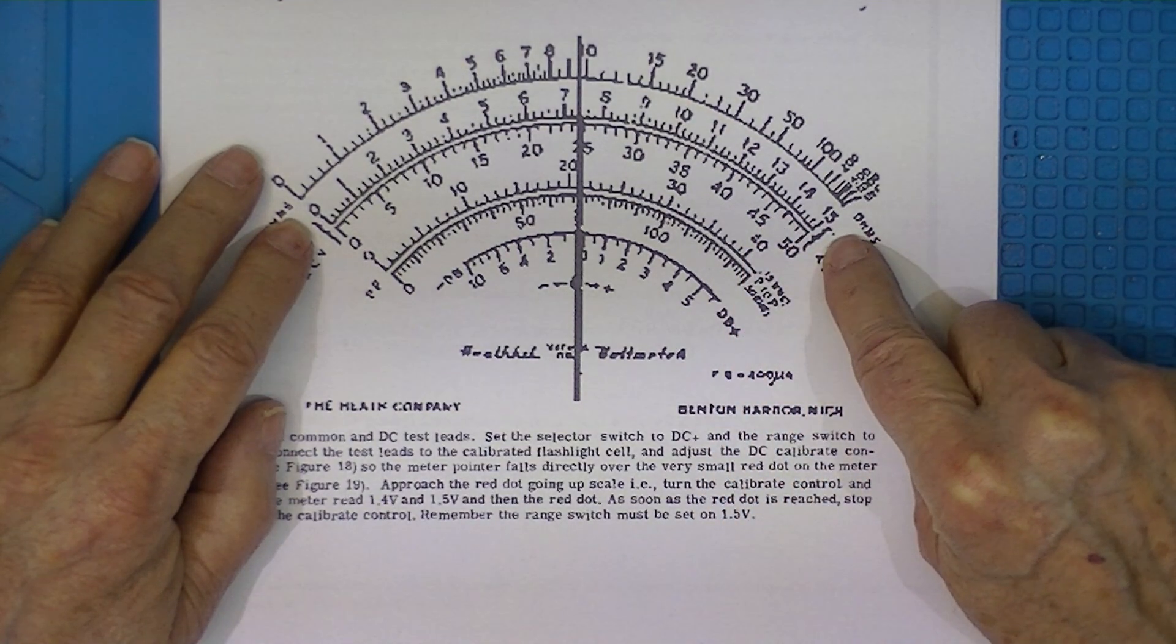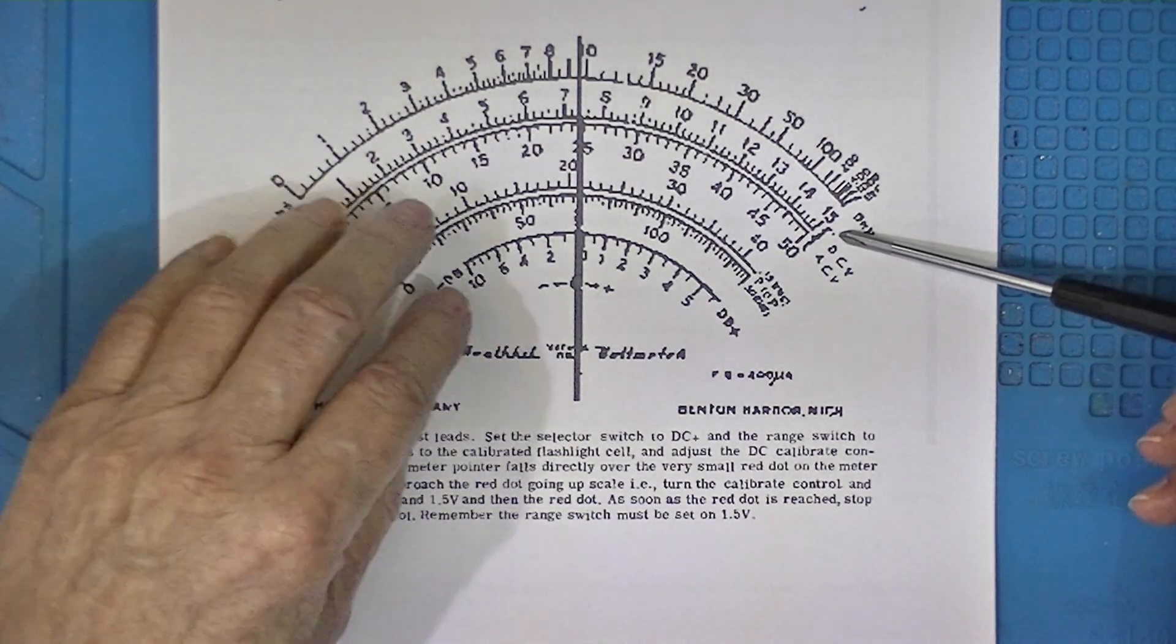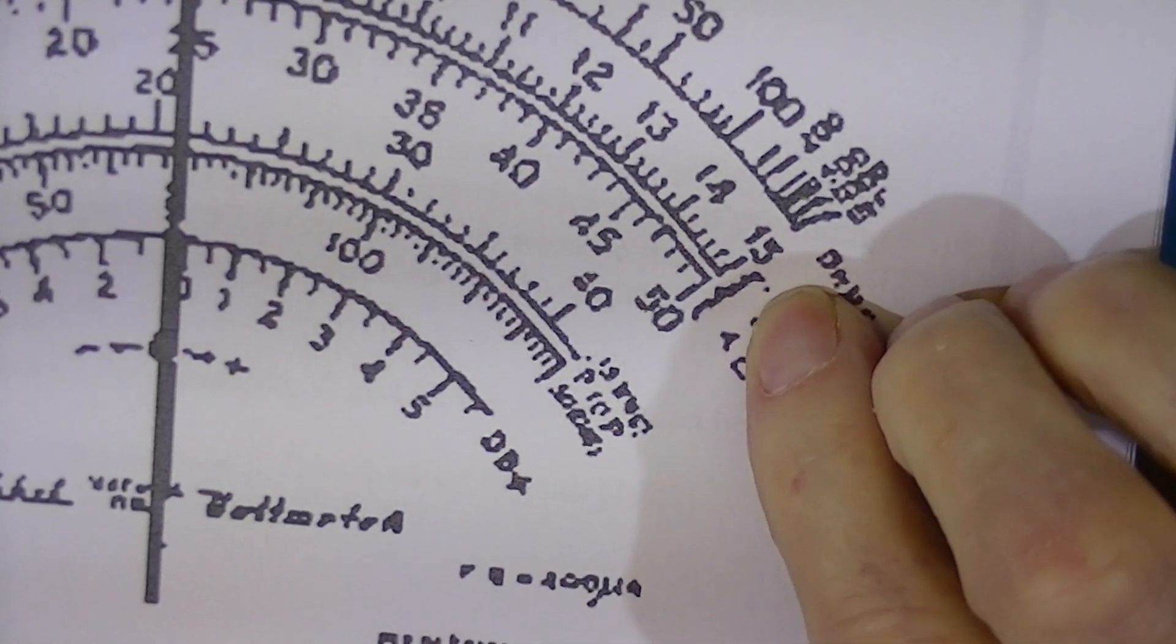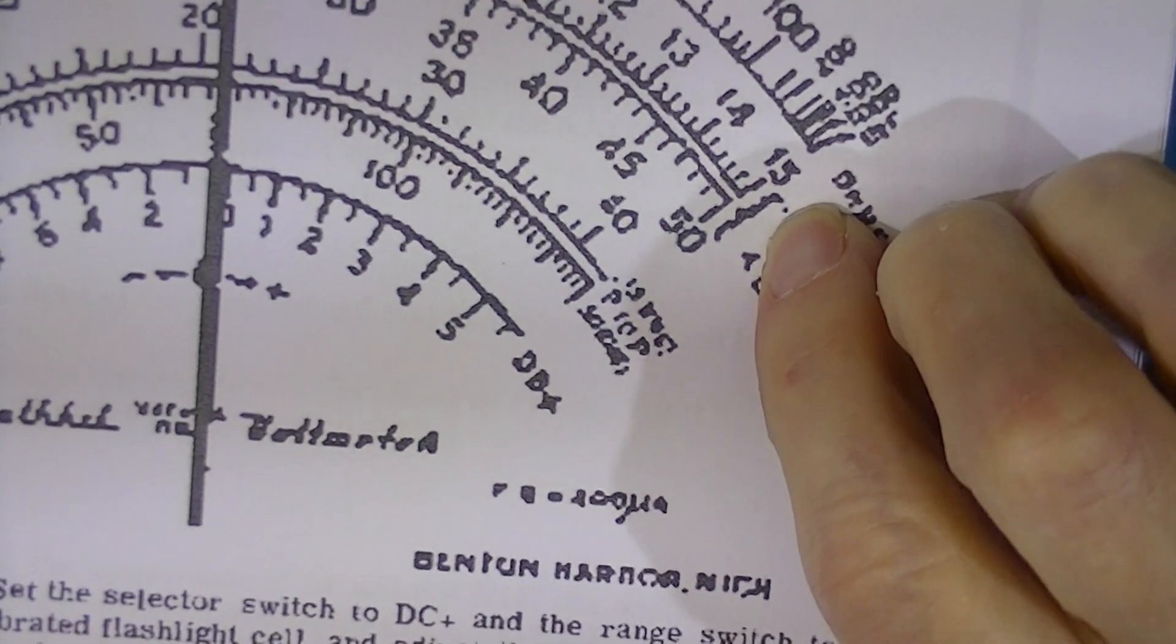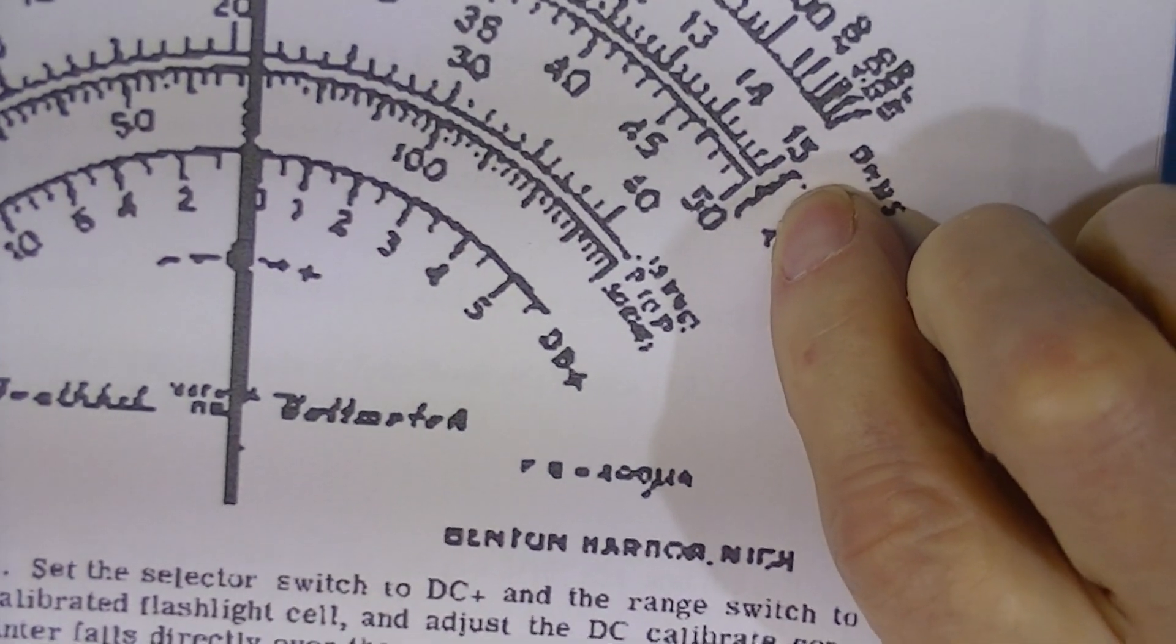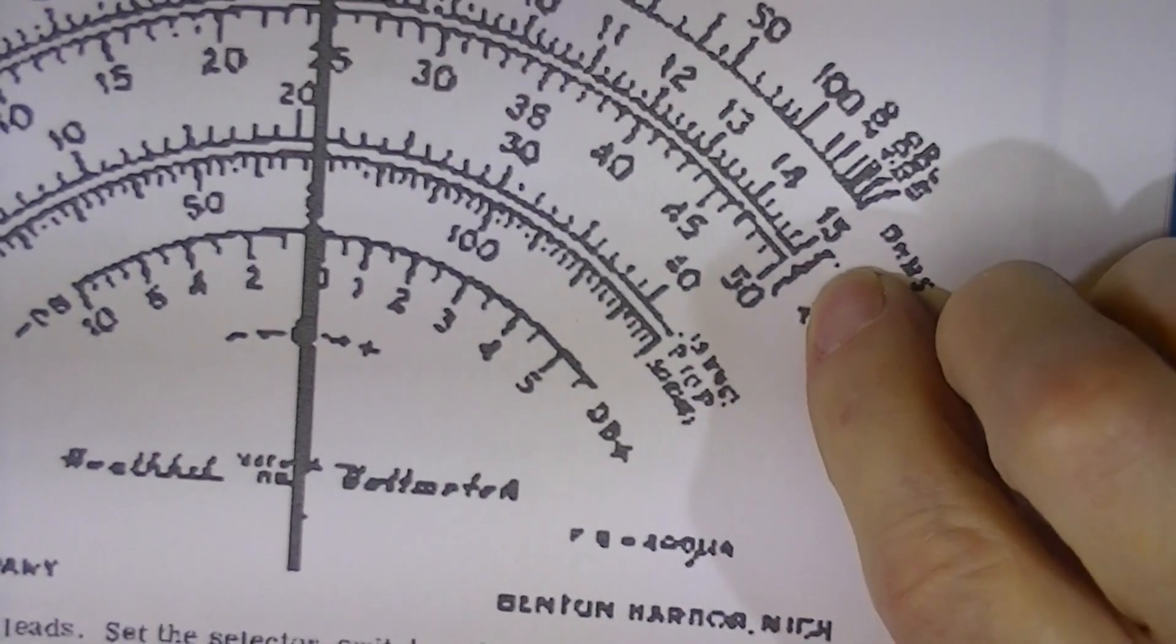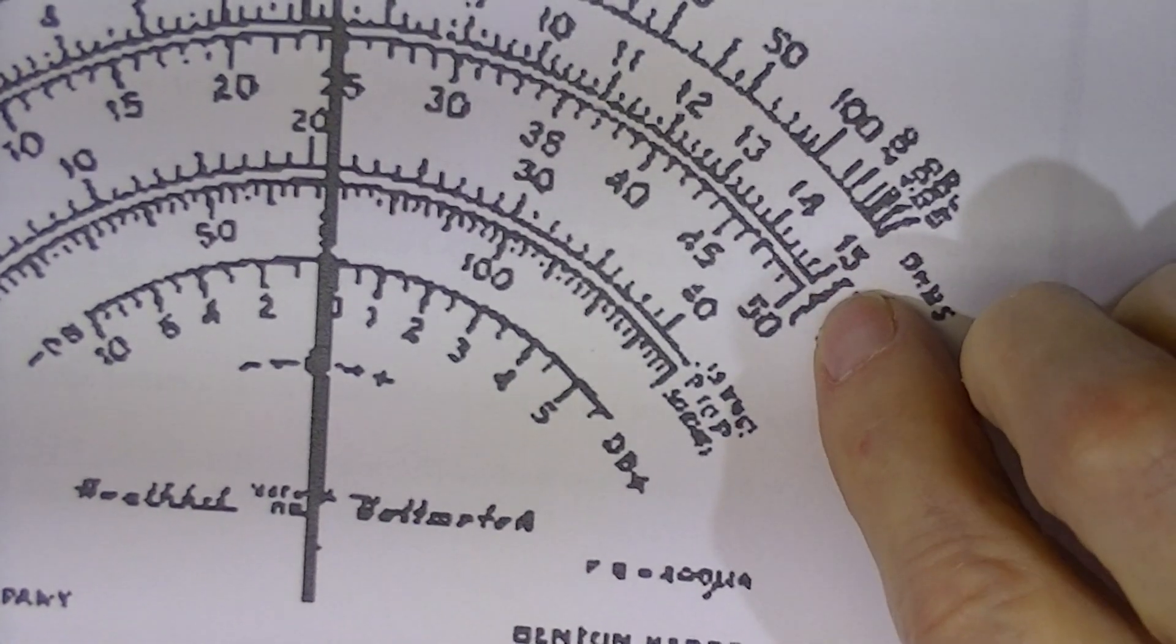See this little dot? Right here. Right there. That was a red dot on the meter face. The pointer was supposed to be adjusted to lie on top of that red dot when the meter was set to 1.5 volts full scale and a fresh zinc carbon cell was being measured.